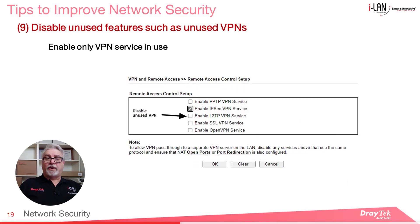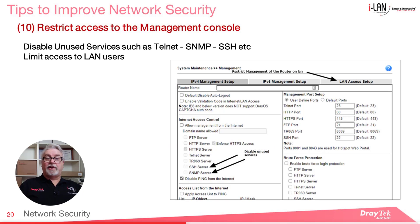You should also disable any unneeded VPN services, as this closes some doors for hackers. In later firmware versions, DrayTek have disabled some of these services by default, so you will need to enable the required service if you need to use it. Similarly, you should always disable unused services such as Telnet, SNMP, SSH and so on. You can even limit access to the management console to certain LAN subnets.